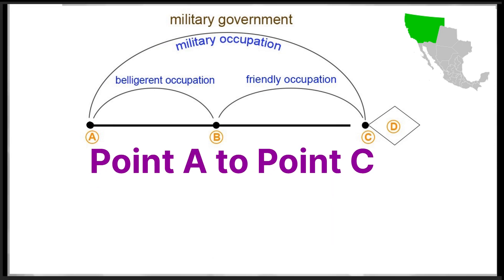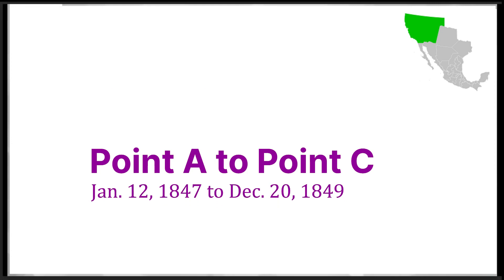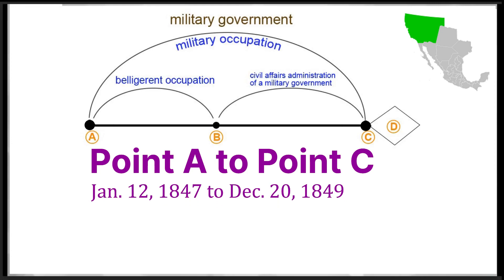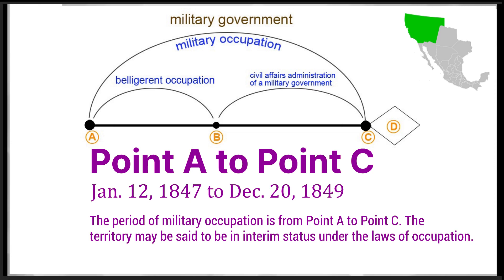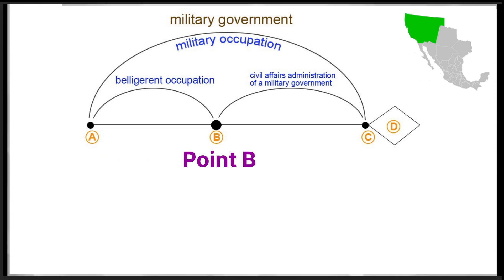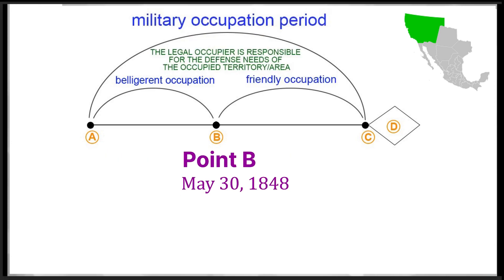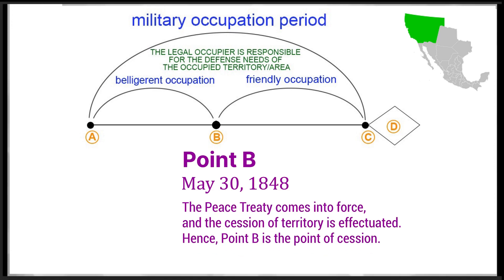Point A to Point C: January 12, 1847 to December 20, 1849. The period of military occupation is from Point A to Point C. The territory may be said to be in interim status under the laws of occupation. Point B, May 30, 1848: the peace treaty comes into force and the cession of territory is effectuated. Hence, Point B is the point of cession.